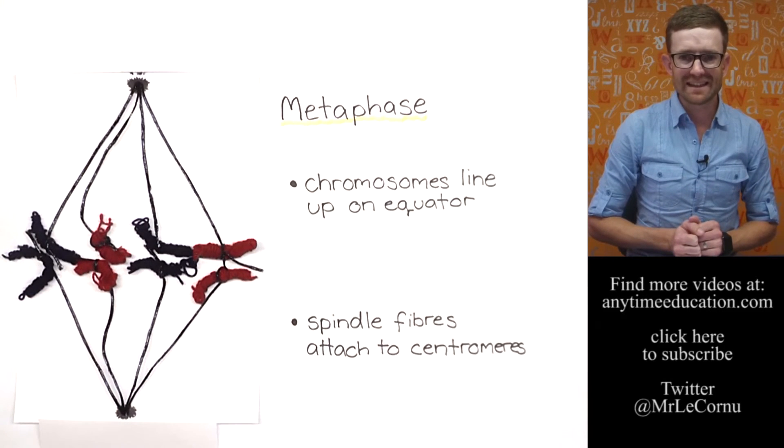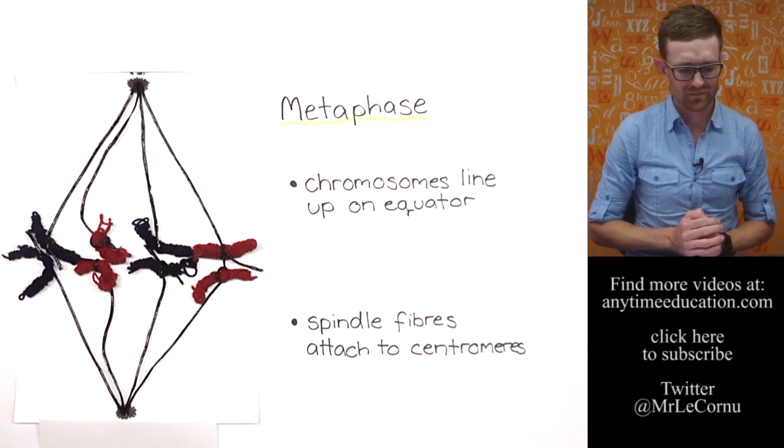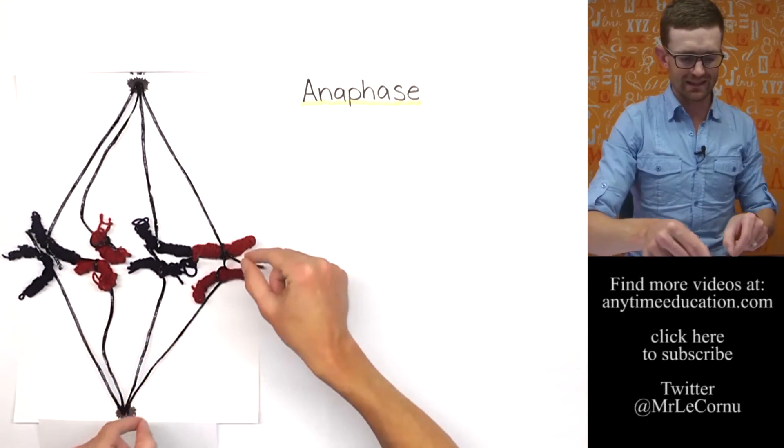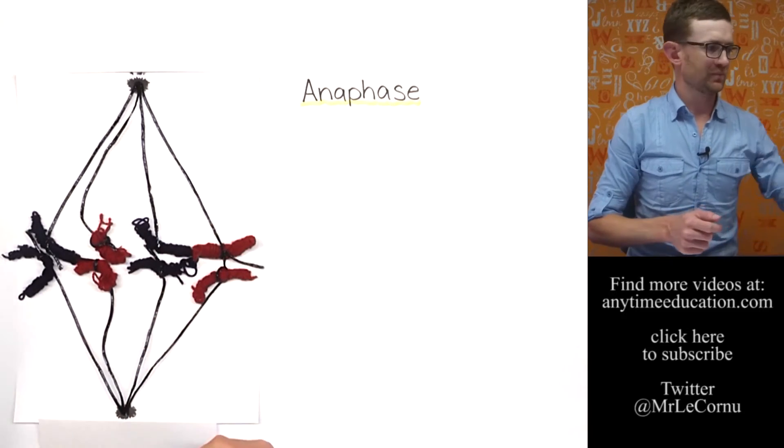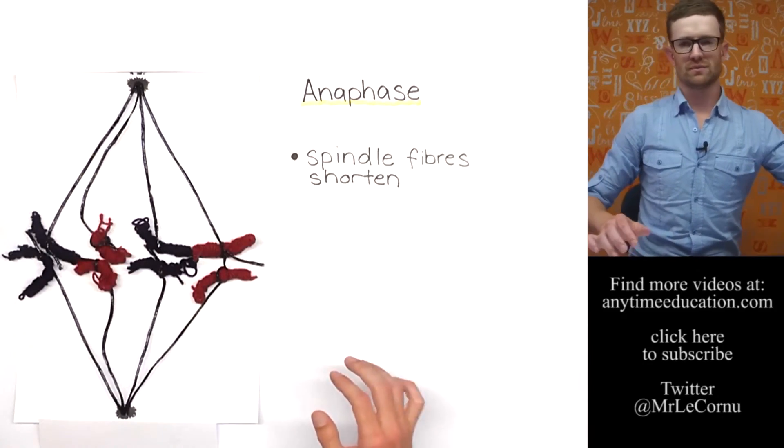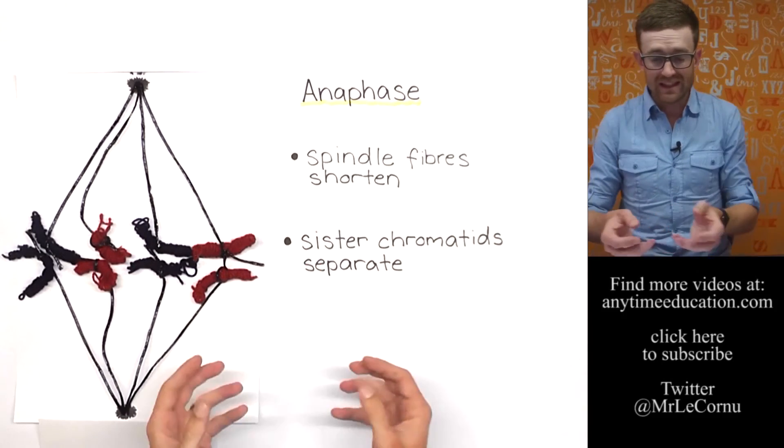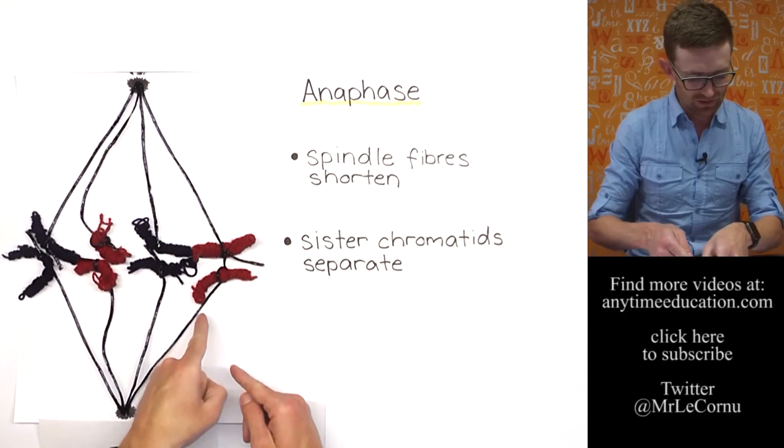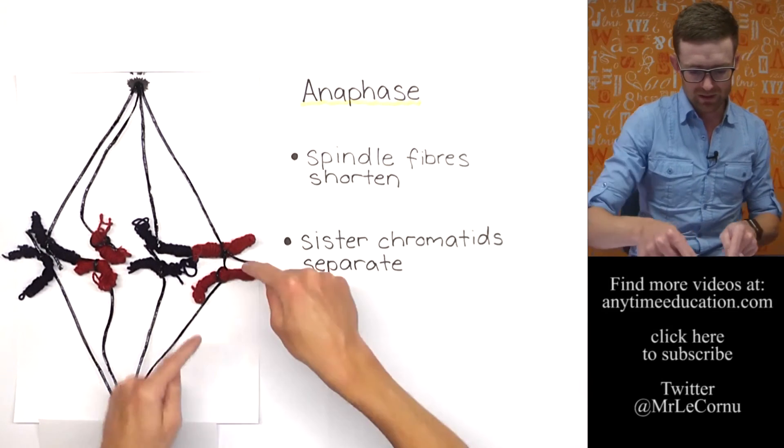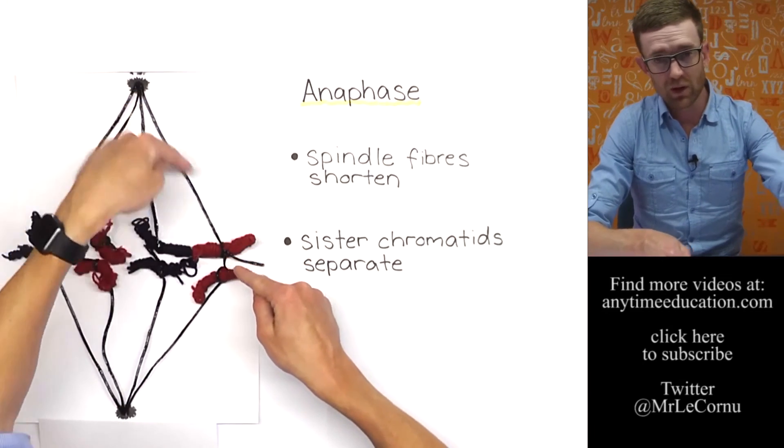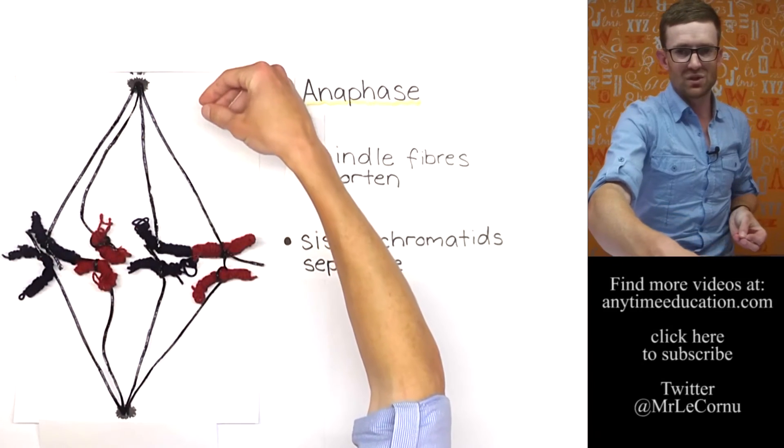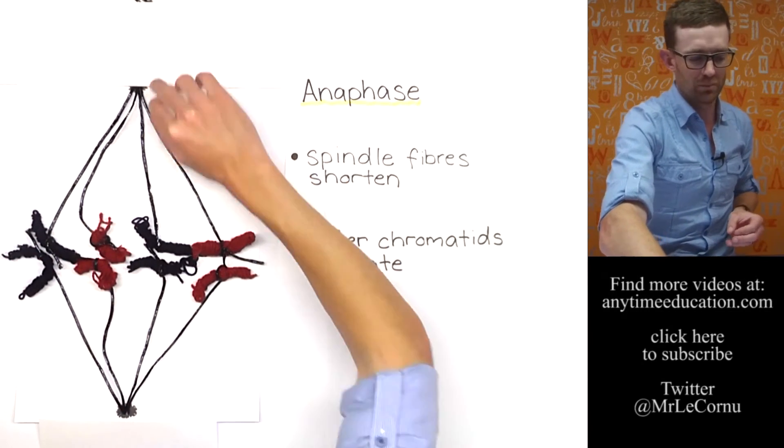And the next thing that will happen is a process called anaphase, so our next stage is anaphase. Now it's time to separate these sister chromatids from each other. The way that that happens is the spindle fibers shorten. And when the spindle fibers shorten, it separates the sister chromatids. Because you can imagine if this spindle fiber shortens, this sister chromatid is coming this way. But if this spindle fiber shortens, this sister chromatid is going that way. And we're eventually going to get them to reach opposite ends of the cell or opposite poles.